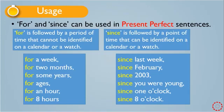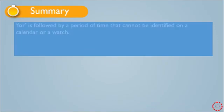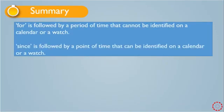Now we have got to the summary. 'For' is followed by a period of time that cannot be identified on a calendar or a watch. But 'since' is followed by a point of time that can be identified on a calendar or a watch.